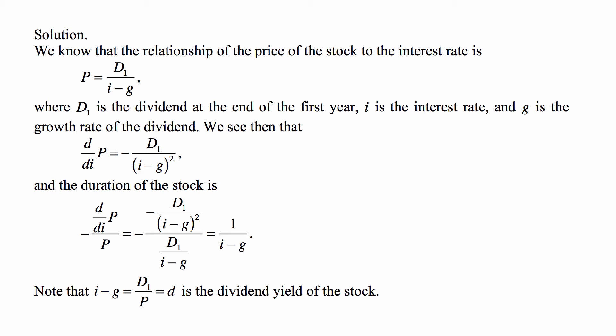In this model, by the way, I minus G is the dividend divided by the price. That's called the dividend yield of the stock. So, actually, duration in this model is equal to the reciprocal of the dividend yield of the stock.